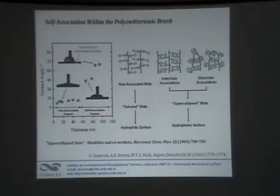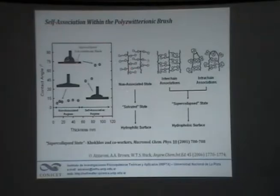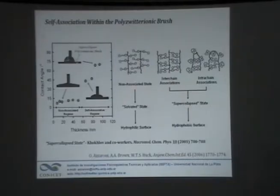The surface is becoming more and more hydrophobic. The reason is that these polymer chains have behavior dependent on the molecular weight. Upon increasing the molecular weight, we have self-association of these chains — called by someone in the States a 'super-collapsed state' — in which these chains prefer to collapse. The properties of the surface are highly dependent on the thickness of the polymer brush, so depending on the thickness we can have a surface which is hydrophilic or hydrophobic.